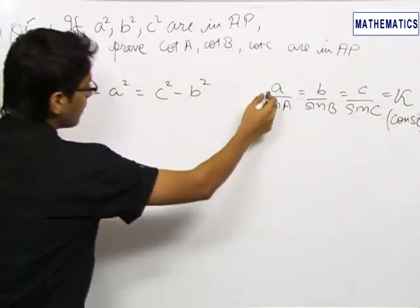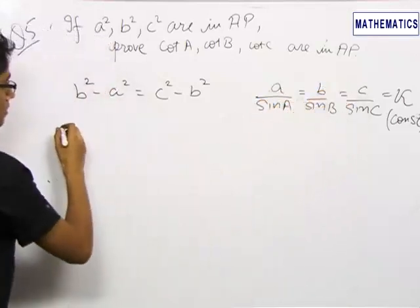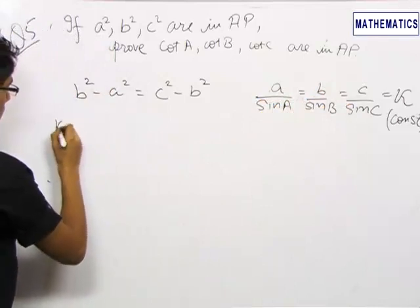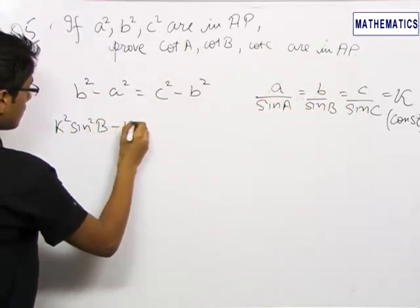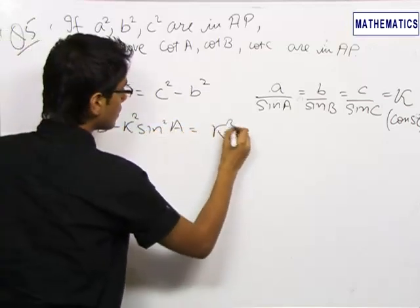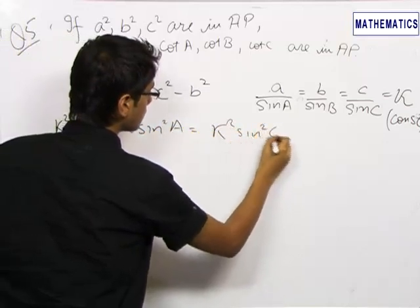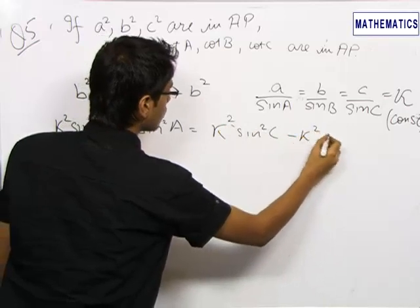So we replace A by k sin A, B by k sin B and C by k sin C. So B square becomes k square sin square B minus k square sin square A equals k square sin square C minus k square sin square B.